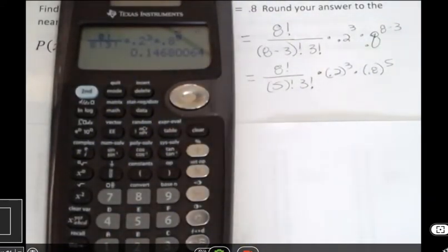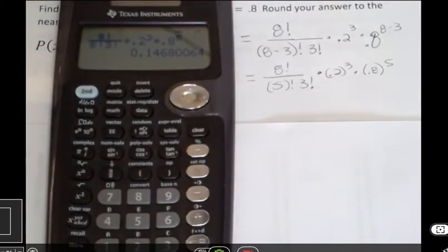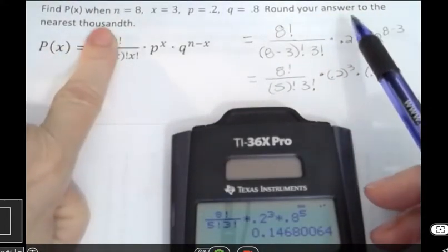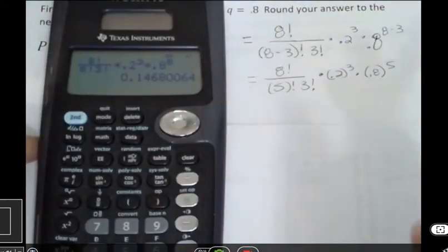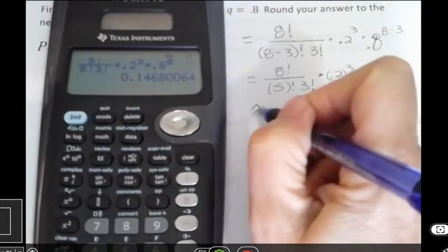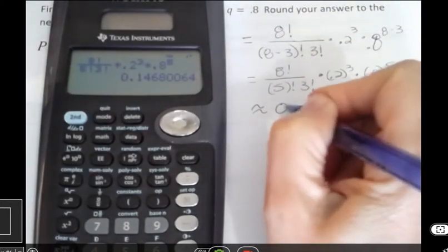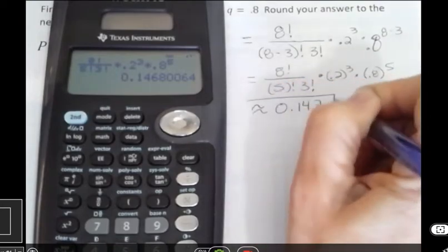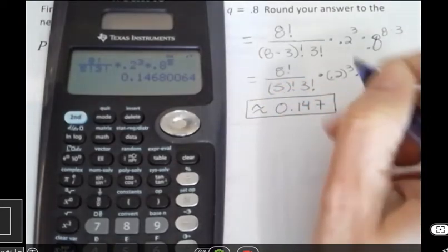And I'm going to get a long number. And I want to make sure that I have checked to see what I want to round to. So it says up here in my directions, round to the nearest thousandth. And that's three places out. So the answer that I'm going to get is approximately 0.147. That's going to be my approximation for this one.